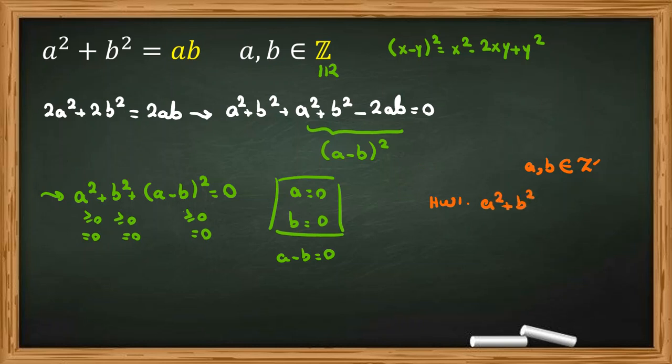a² + b² = 2ab, a² + b² = ab/2, a² + b² = 3ab.